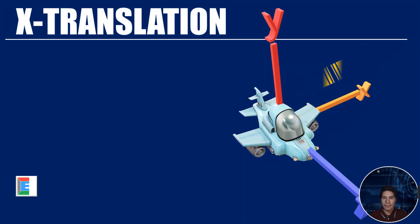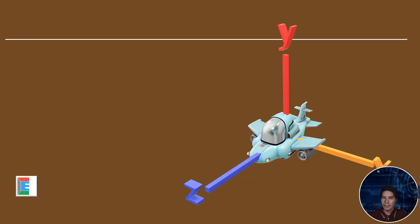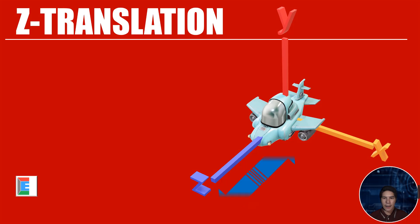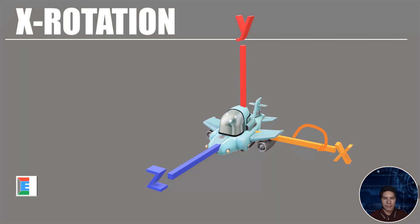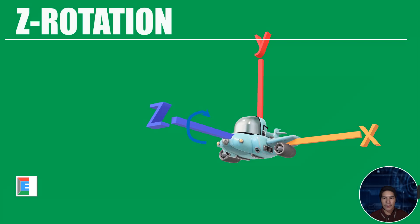In the x direction, an object is free to move along its x axis — left or right. In y translation, it is free to move up or down. In z translation, it is free to move forward or backward. For x rotation, an object is free to rotate about its x axis. For y rotation, it is free to rotate about its y axis. And for z rotation, it is free to rotate about its z axis.